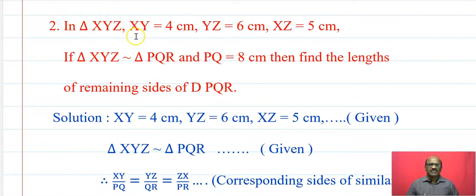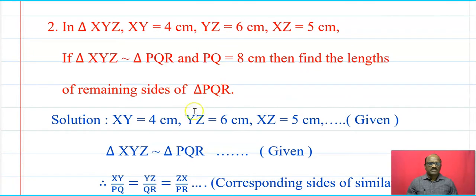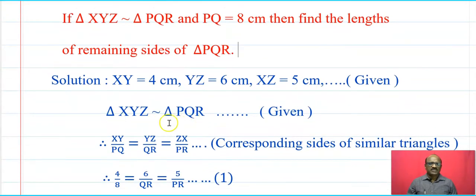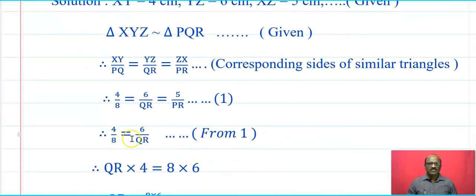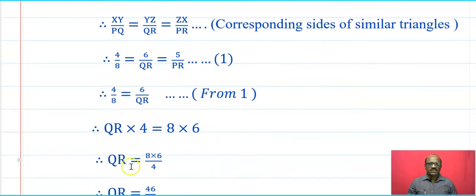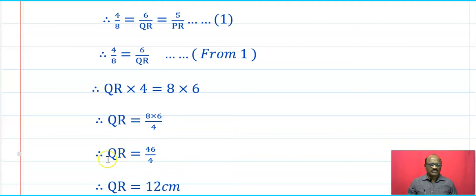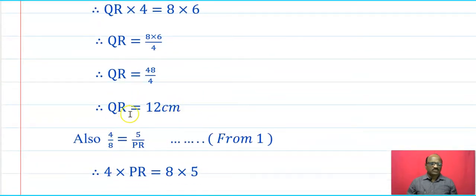Question 2: In triangle XYZ, XY = 4 cm, YZ = 6 cm, XZ = 5 cm. If triangle XYZ is similar to triangle PQR and PQ = 8 cm, find the lengths of the remaining sides of triangle PQR. Since the triangles are similar, XY upon PQ equals YZ upon QR equals ZX upon PR. Substituting: 4 upon 8 equals 6 upon QR. Cross multiplying: QR × 4 = 8 × 6 = 48, therefore QR = 48 upon 4 = 12 cm.